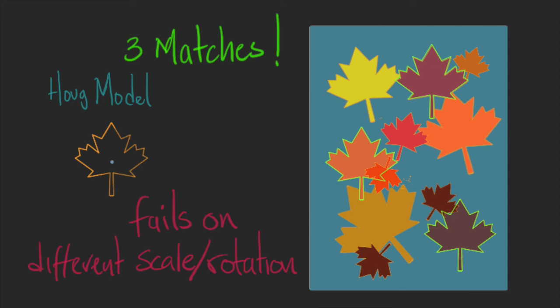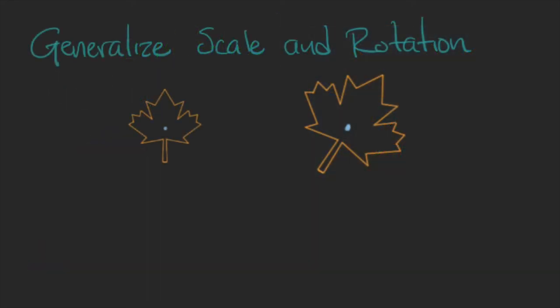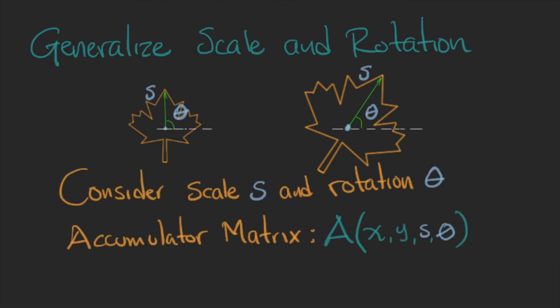But you can expand the model including the scale and rotation in your parametric space. So you will have an accumulator array of four dimensions that are related to XY points in the image. Of course, this will be computationally demanding, and you can run out of memory depending on the image you are processing.